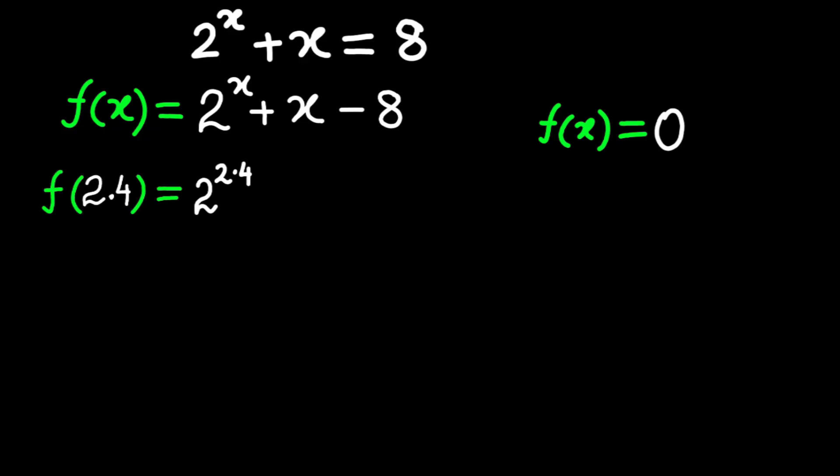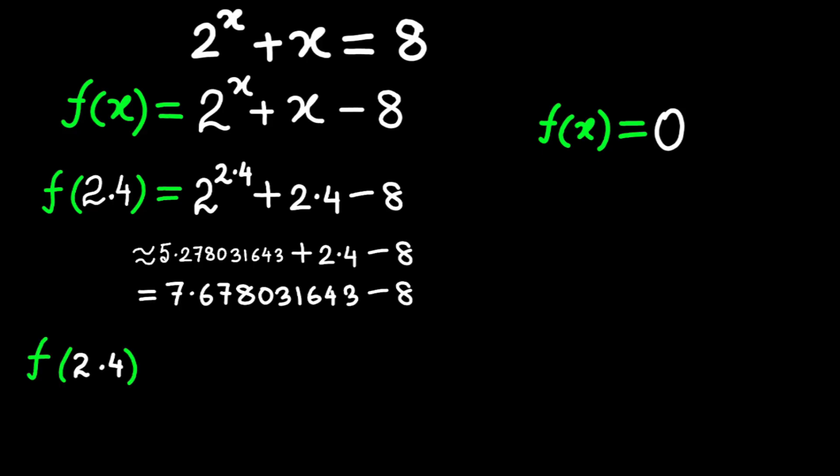Let's compute f of x at x equals 2.4. First, 2 to the power 2.4, let's just use a calculator for precision. 2 to the power 2.4 is approximately 5.278031643. Now add x equals 2.4. 5.278031643 plus 2.4 equals 7.678031643. Subtract 8, f of 2.4 is approximately 7.678031643 minus 8, which is approximately negative 0.321968356. Still negative, so x equals 2.4 is too small, but we're getting closer.